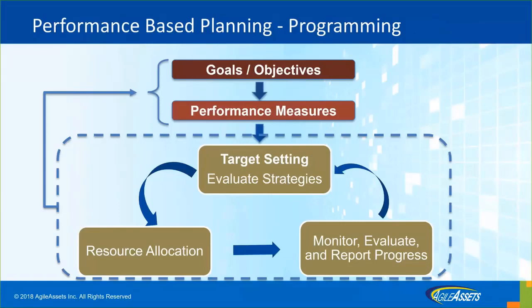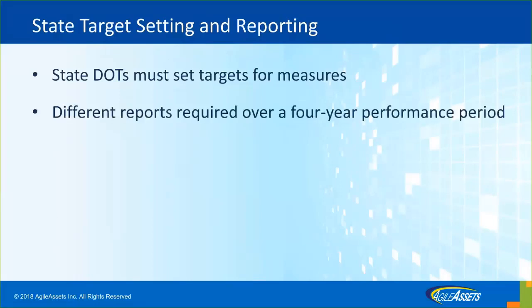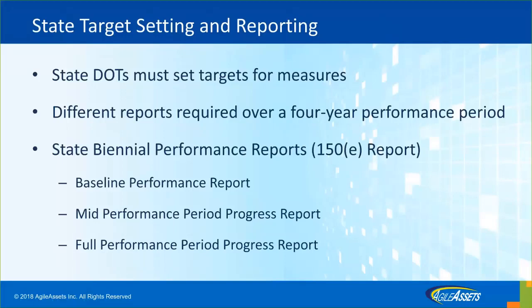States are mandated, at least in the U.S., to follow these rules. There are MAP-21, FAST Act, and federal requirements to monitor, evaluate, and report progress. State Departments of Transportation must set targets for each measure for each program area. In the context of bridges, each agency needs to submit different reports over a four-year performance period.